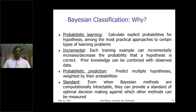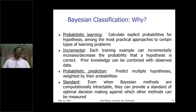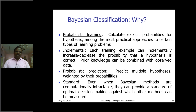Even when Bayesian methods are computationally intractable, they can provide a standard of optimal decision making against which other methods can be measured. The Bayesian classifier determines whether the results found by a method are perfectly accurate by comparing them with other methods applied to the same dataset. This is another form of information extraction.